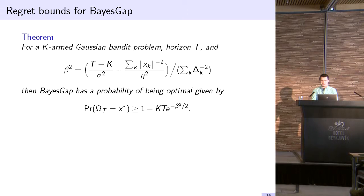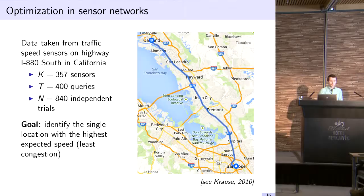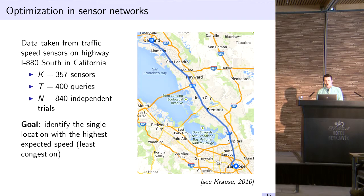One task we tried this out on was optimization in sensor networks. This comes from earlier work of Krause, I believe in 2010. We have a number of speed sensors, traffic speed sensors, on highway I-880 south in California. We have 357 sensors corresponding to the query points we're interested in. In these experiments we allow ourselves a horizon of 400, so we look for 400 points. To get error bars, we redid this 840 times. Our goal is to identify the single location with the highest expected speed, or the least congested area of this highway.